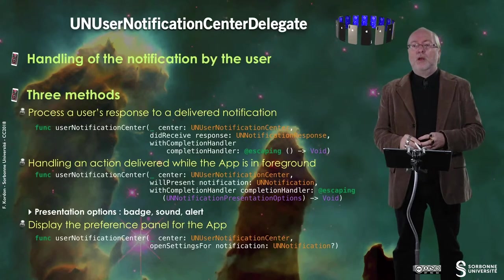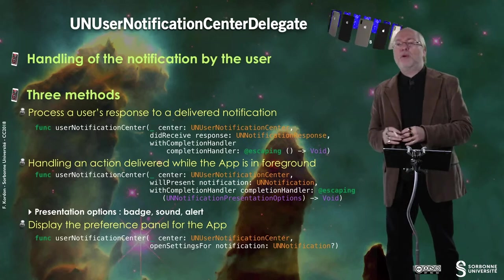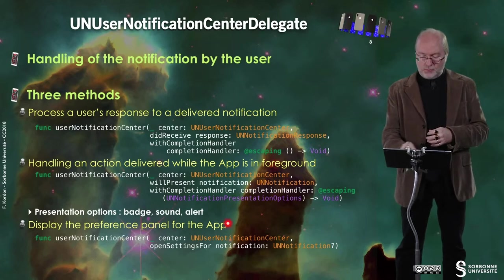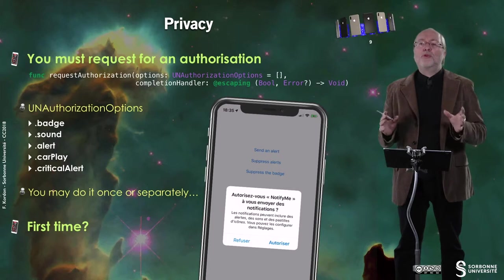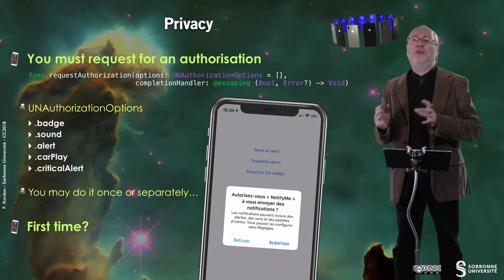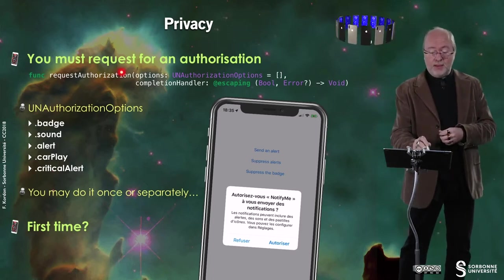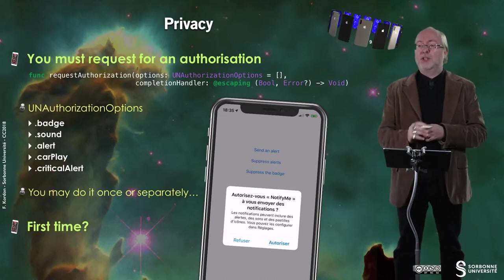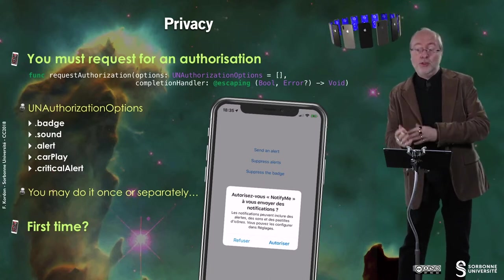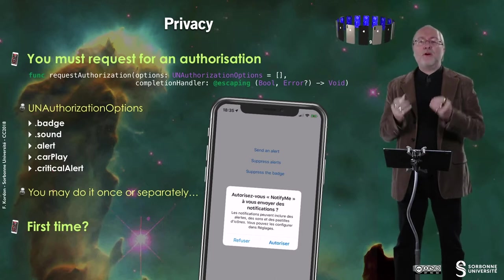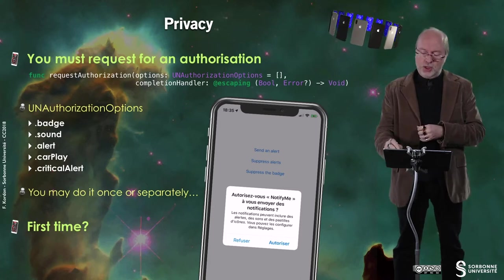Typically you may have options with sound, display an alert, or something called a badge. You can also have a way to directly access the preference panel of the app by requesting the configuration of a given notification. Of course there are lots of privacy issues with notifications, so you must request authorization before using notifications. This is the method you use — you request a given authorization, and once this has been checked, a completion handler is invoked. You have a boolean that states if the authorization is granted or not, and if not, you get an error message. The first time your application runs and requests such authorizations, a message asks the user to authorize or refuse the application's access to notifications.